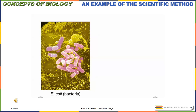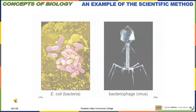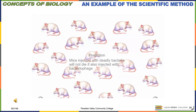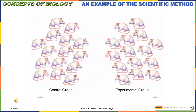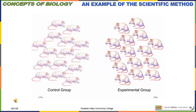Here's an example: bacteria such as E. coli cells can cause deadly disease. Some viruses called bacteriophages can infect and kill bacteria. Researchers hypothesized that bacteriophages might protect laboratory mice from bacterial infections. They predicted that mice injected with deadly bacteria would not die if also injected with bacteriophages. To test this, they divided mice into a control group and an experimental group — 15 female mice each, same age and strain. The control group was injected with deadly E. coli; the experimental group was injected with E. coli and bacteriophage. Within 32 hours all control mice died, while experimental mice remained healthy. The scientists concluded that bacteriophage injection can protect lab mice against bacterial infection.